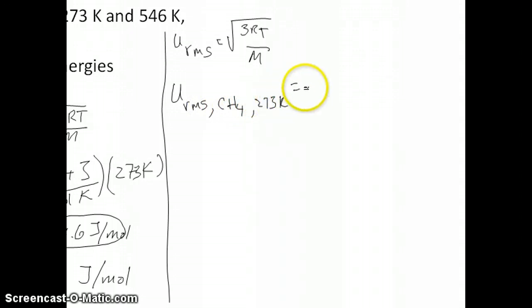Let's try this first for U RMS for CH4 at 273 Kelvin. So then what you need to do is take a square root of 3 times R. Now remember, R is 8.314 in this case, joules per mole Kelvin. But I want to actually write out the joules. The joules itself is kilogram meter squared per second squared. That's joule. And then this whole thing is per mole Kelvin. That's R. Then we multiply that by the temperature, which in this case is 273 Kelvin. That's the numerator.